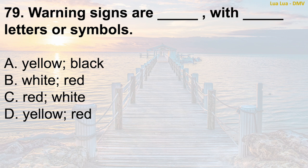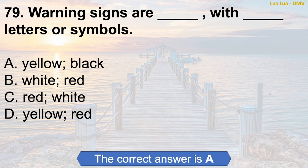Question 79: What colors are used for warning signs? A. Yellow, black. B. White, red. C. Red, white. D. Yellow, red. The correct answer is A: Yellow, black.